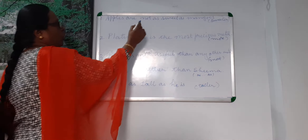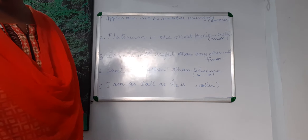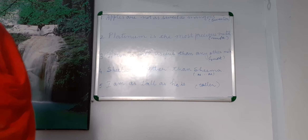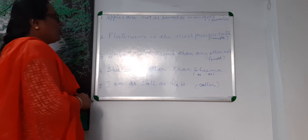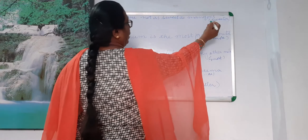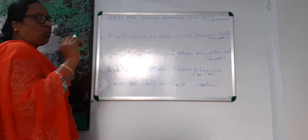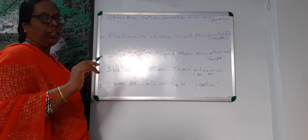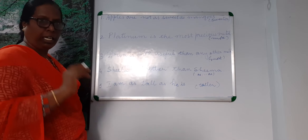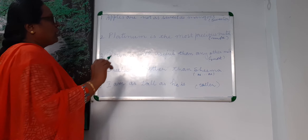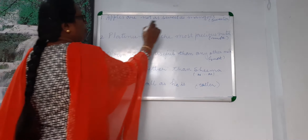Apples are not as sweet as mangoes. You are asked to rewrite it by using 'sweeter.' When the adjective is 'sweeter,' it is in comparative form. So, what you have to add when rewriting in comparative form — that I explained in the last class. When I write the answer, you can understand better.